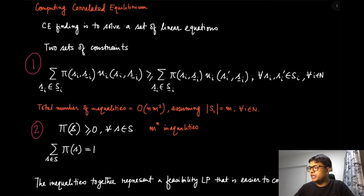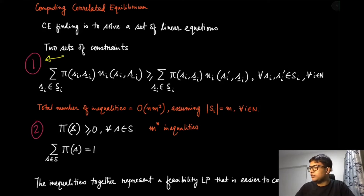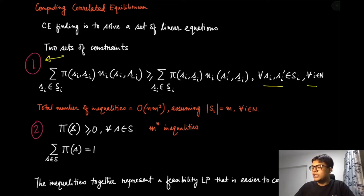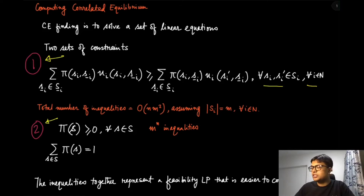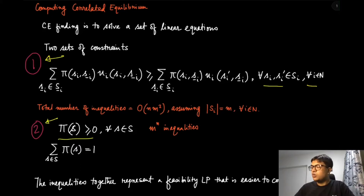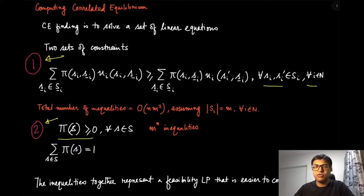Condition one, written here, comes directly from first principles — it is just the definition of correlated equilibrium. This inequality must be satisfied for every s_i and s_i' and for all players i in N. The second set of inequalities is just the feasibility condition: these are valid probability distributions, so each pi(s) should be non-negative and they should sum to one.